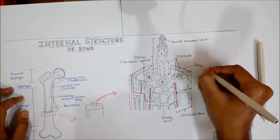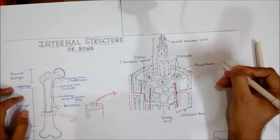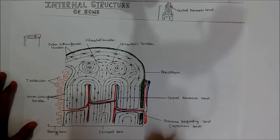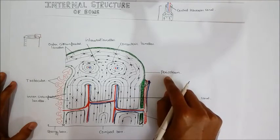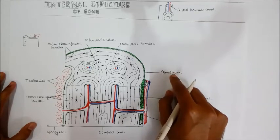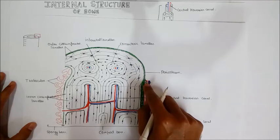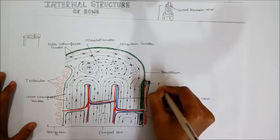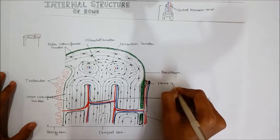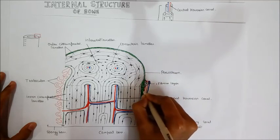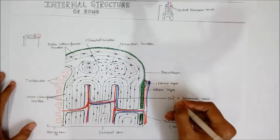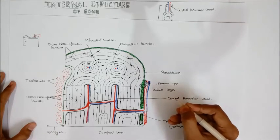The term 'periosteum' comes from 'peri' meaning around and 'osteon' meaning bone — so it is the fibrous sheath-like membrane surrounding the bone. The periosteum consists of two layers: the outer fibrous layer and the inner cellular layer, which contains osteogenic cells and osteoblasts.